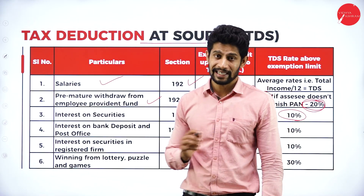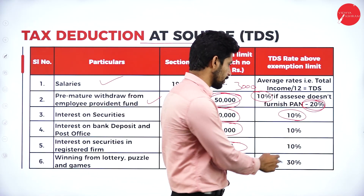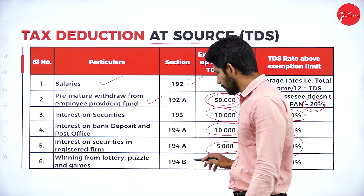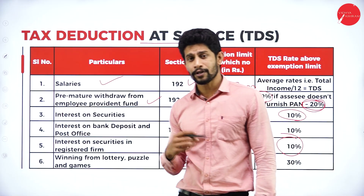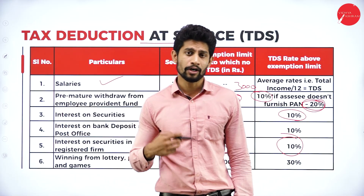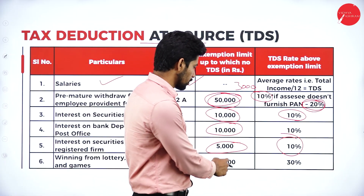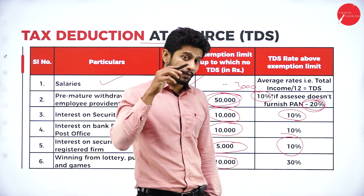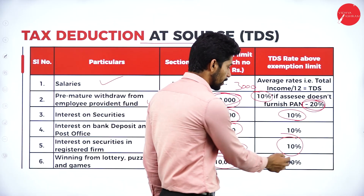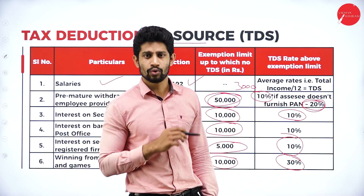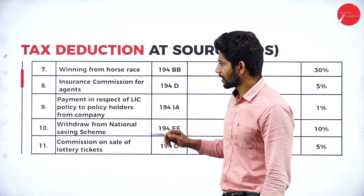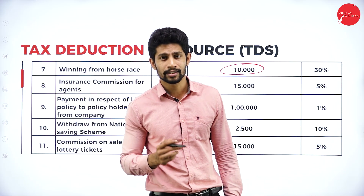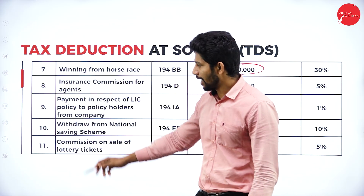For winning from lottery, puzzle games, or gambling: up to 10,000 rupees no TDS — if you win exactly 10,000 they give you the full cash. If you win more than 10,000 rupees, 30 percent TDS is deducted on the total income. For winning from a horse race: same rule — up to 10,000 no TDS; more than 10,000, 30 percent TDS.